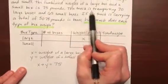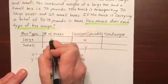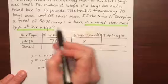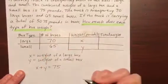Then it says the truck is transporting 70 large boxes, so that's the number of boxes, 70, and 65 small boxes. That goes here, the number of small boxes.